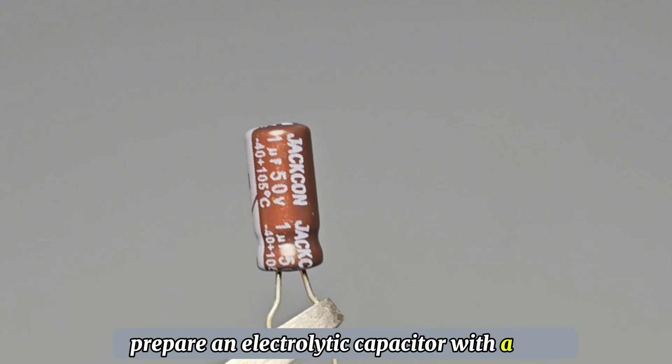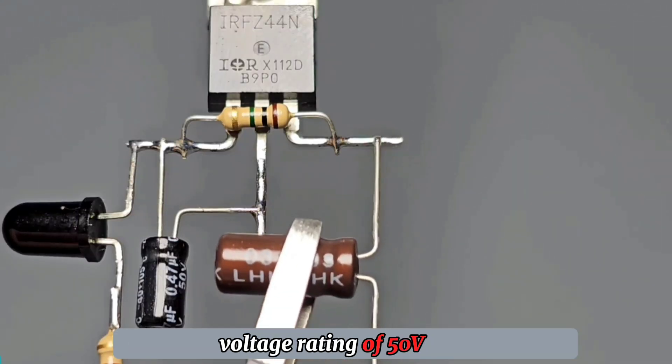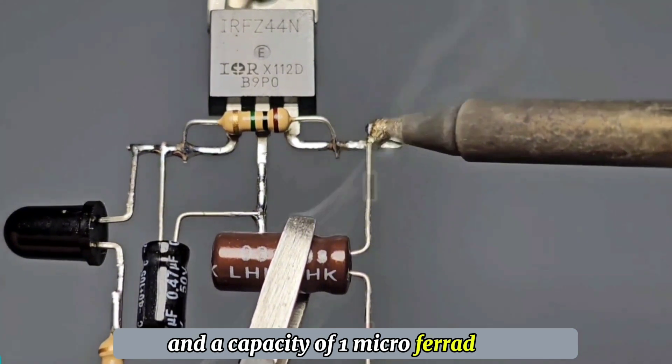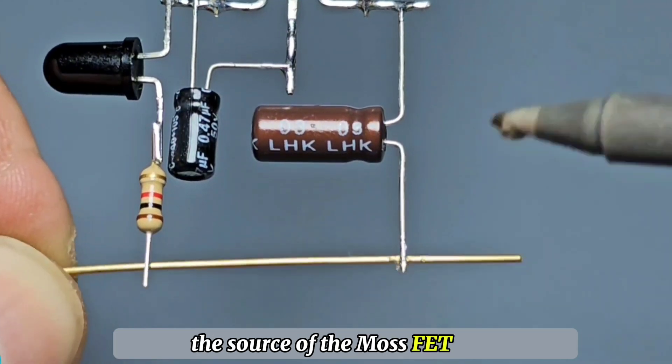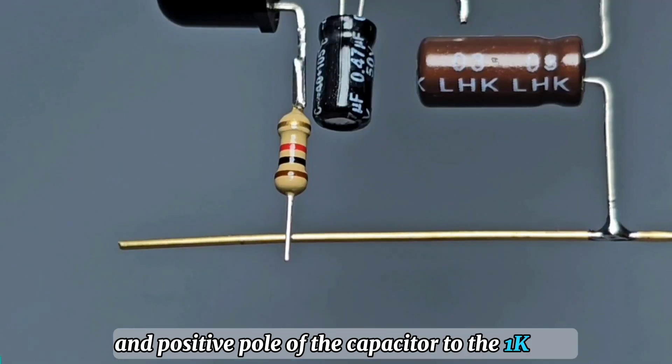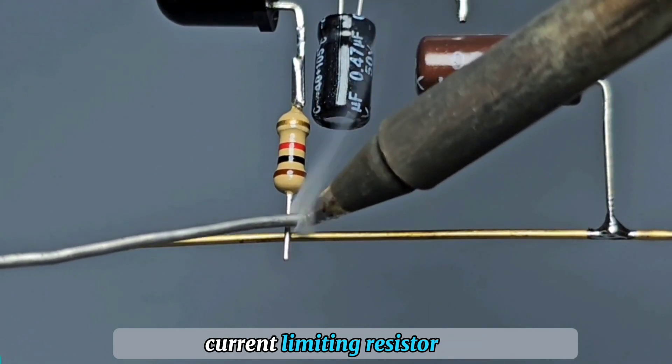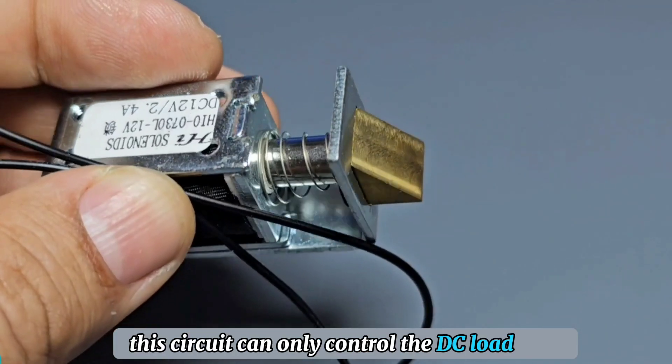Prepare an electrolytic capacitor with a voltage rating of 50V and a capacity of 1 microfarad. The negative pole of the capacitor is connected to the source of the MOSFET and the positive pole of the capacitor to the 1K current limiting resistor. This circuit can only control DC loads.